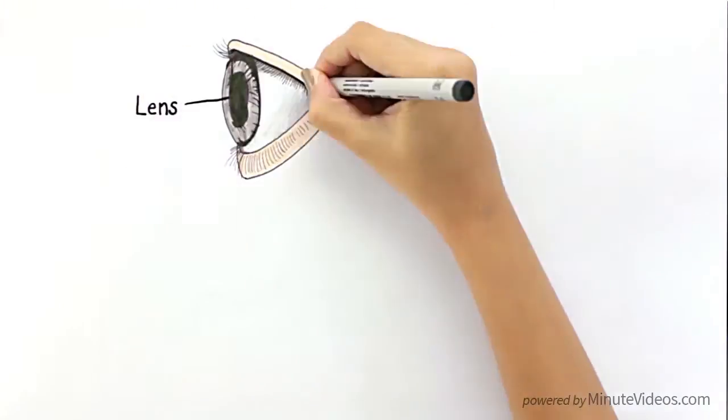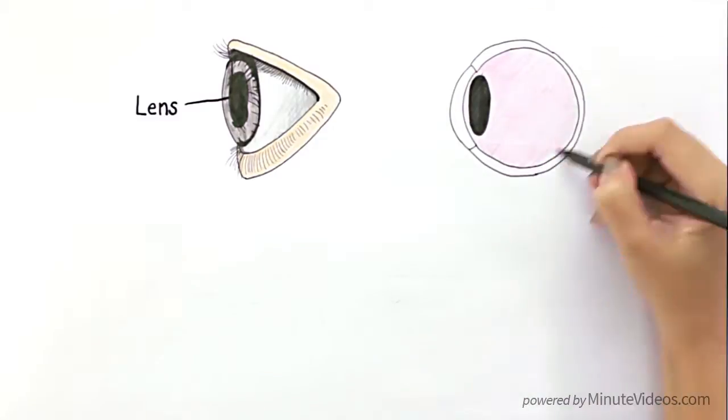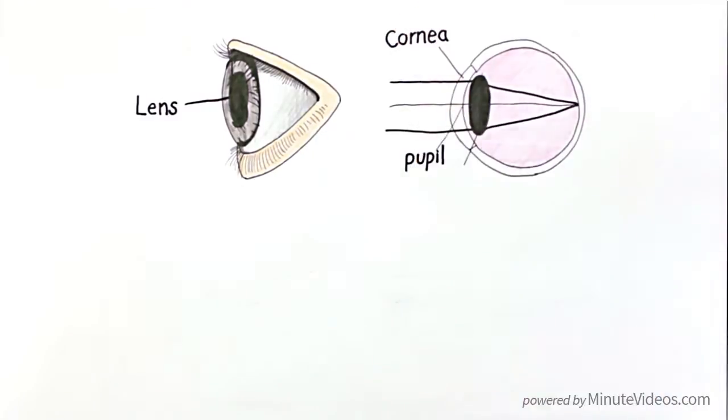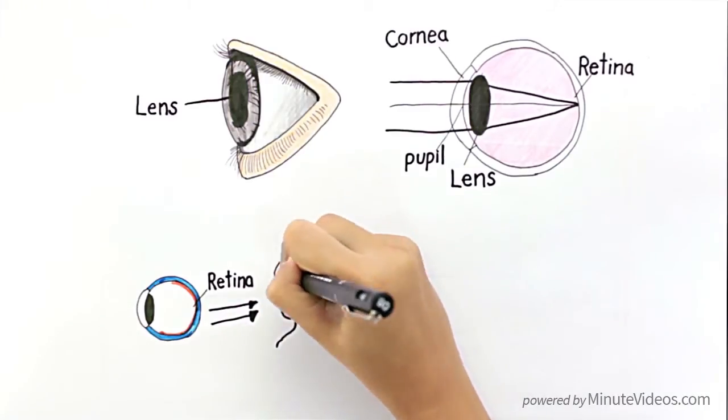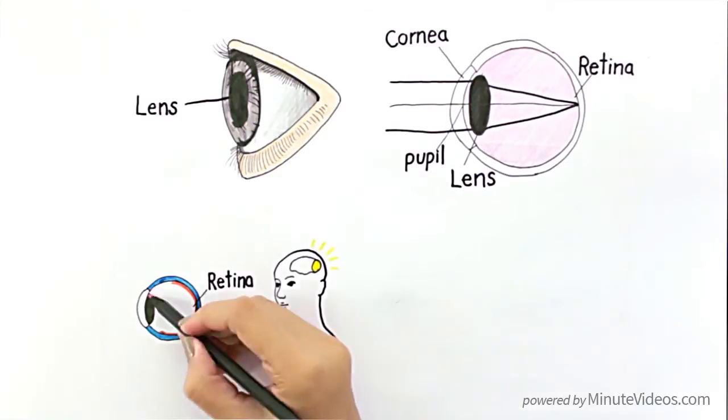Behind the iris is the lens, which bends the light so that all the light that comes in from the outside hits the same spot in the back of the eye, which we call the retina. The retina has nerve cells that send signals to the brain through the optic nerve, and it's only when these signals have reached the brain's visual cortex that we understand what we see.